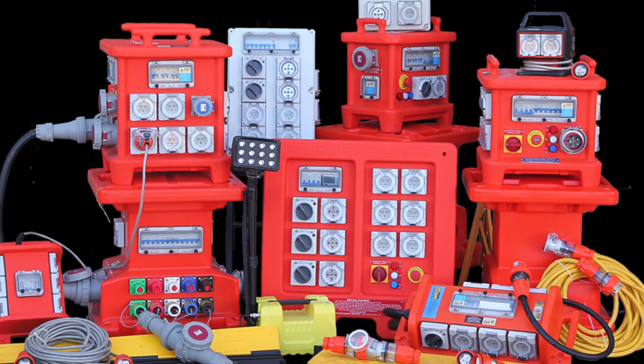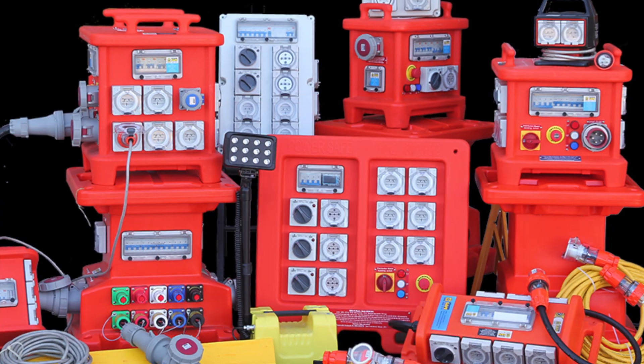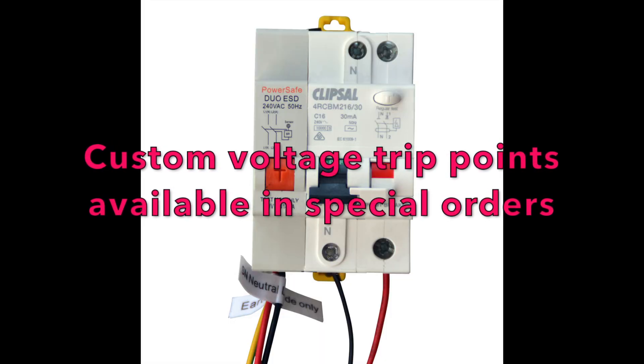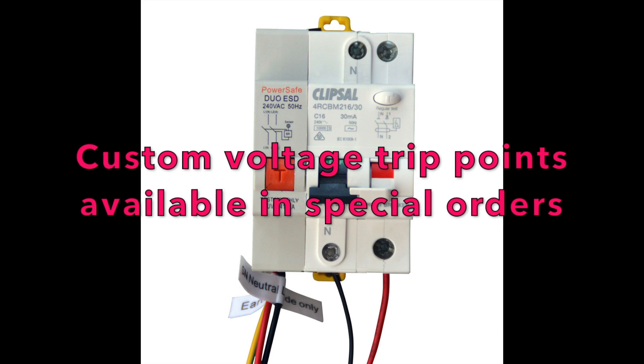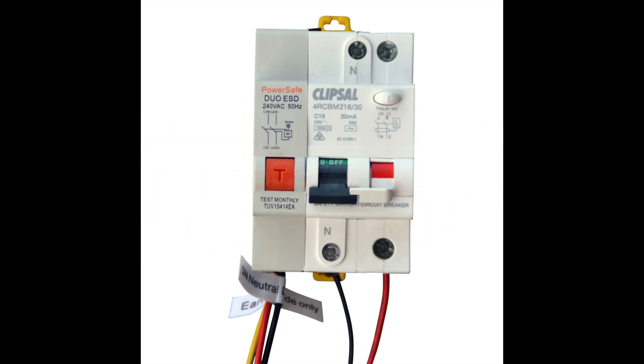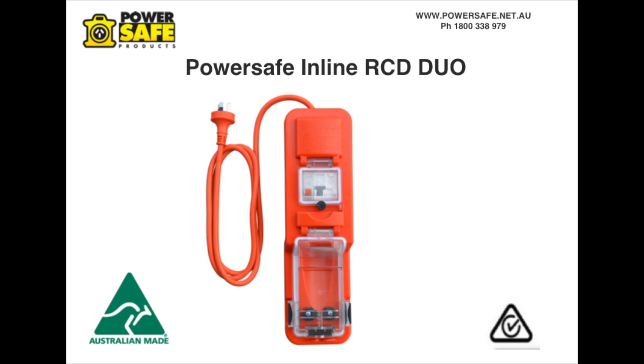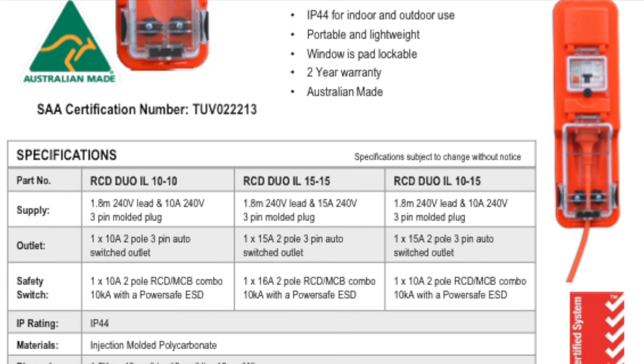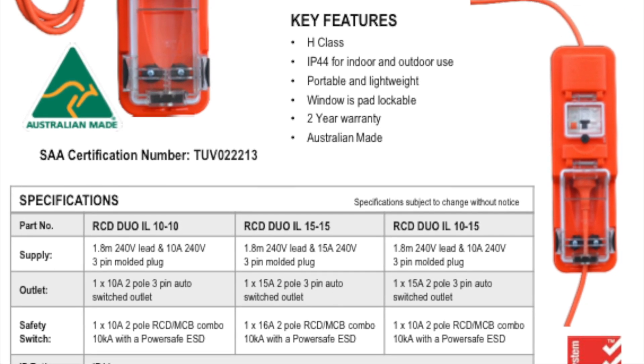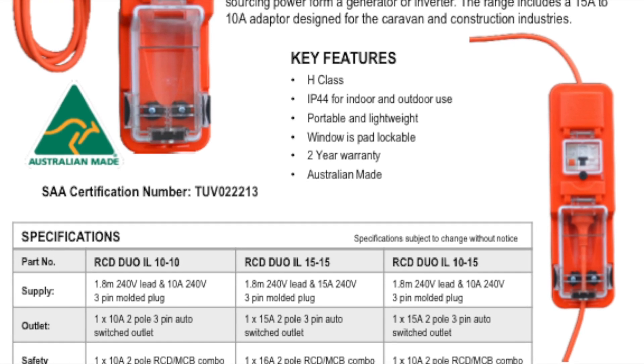The DUO can also be ordered at voltage customized to trip at different voltage levels for high-risk areas such as wet areas or situations where a lower voltage turn-off point may be required. The PowerSafe in-line RCD DUO product is brought to you by PowerSafe products and is Australian made and each and every piece is tested by qualified Australian electricians prior to being dispatched.